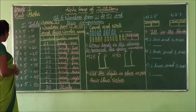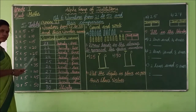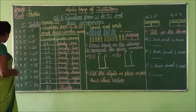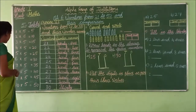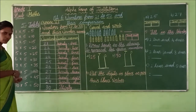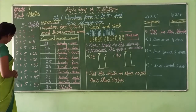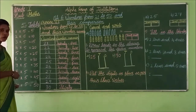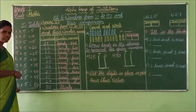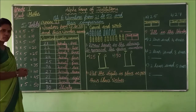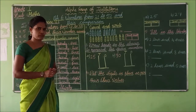Shall we recall? 8 fives are 40, 9 fives are 45, 10 fives are 50. Okay children, you have to practice 5 tables. Write 2 times in your classwork.